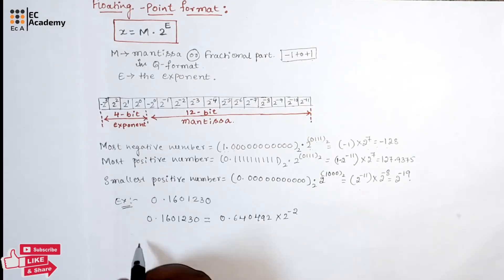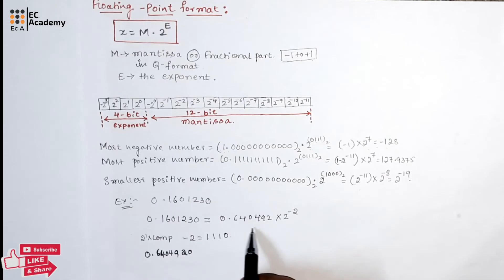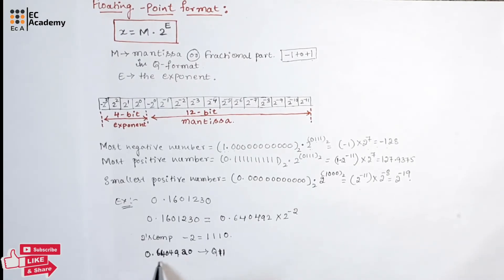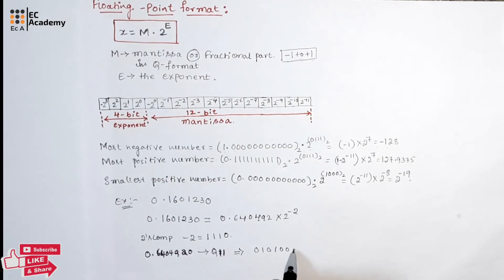Using 2's complement, minus 2 can be written as 1110. Now let us take this mantissa value and use Q11 format. Q11 format is similar to Q15 format where you take the number, multiply by 2 repeatedly, and write the binary digits. Performing Q11 format, you get the value 0, 1, 0, 1, 0, 0, 0, 1, 1, 1, 1, 1.